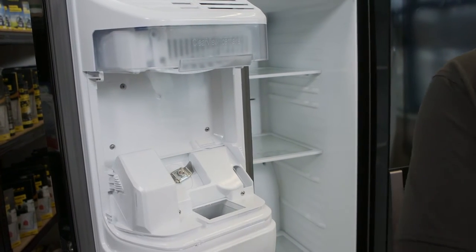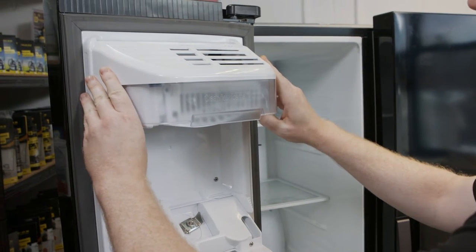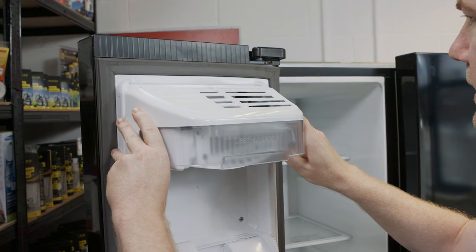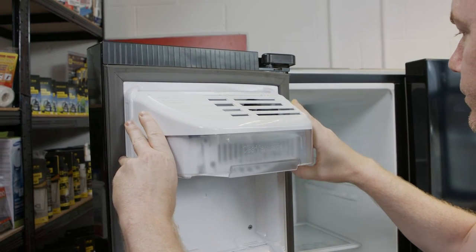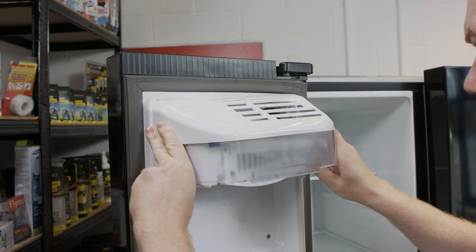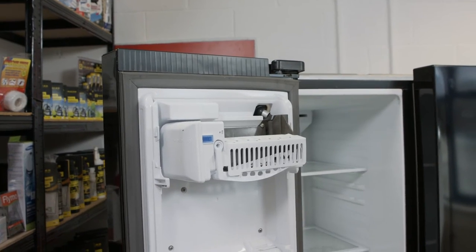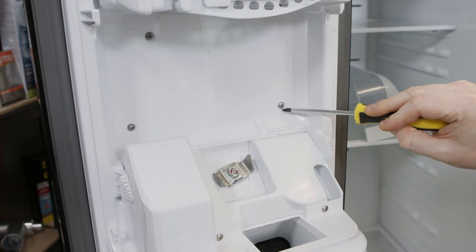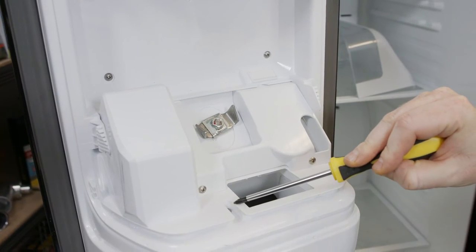Then remove the cover at the top by pushing out either side slightly and lifting up. Next, I need to remove these screws that hold the panels in place here.